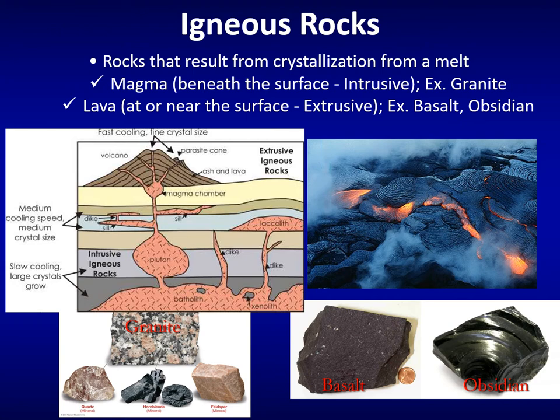Igneous rocks result from crystallization from a melt, either from cooled magma or lava. Magma and lava are the same thing — magma is beneath the surface, and lava is molten rock at or near the Earth's surface. Rocks that cool from magma are called intrusive igneous rocks, and those that cool from lava are extrusive. Examples include granite (intrusive) and basalt or obsidian (extrusive).